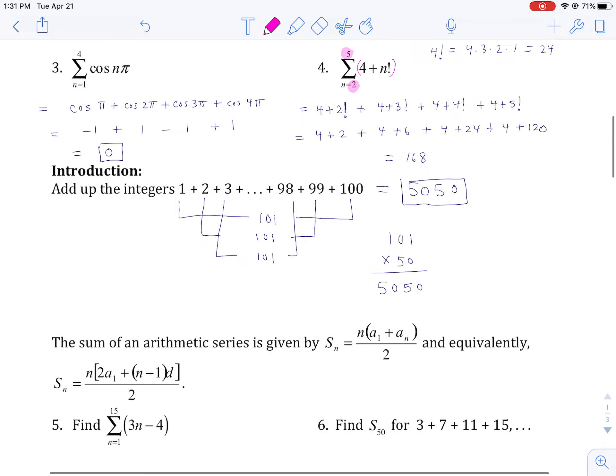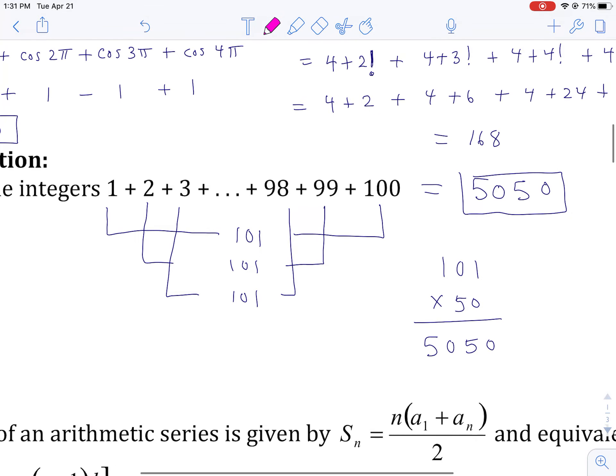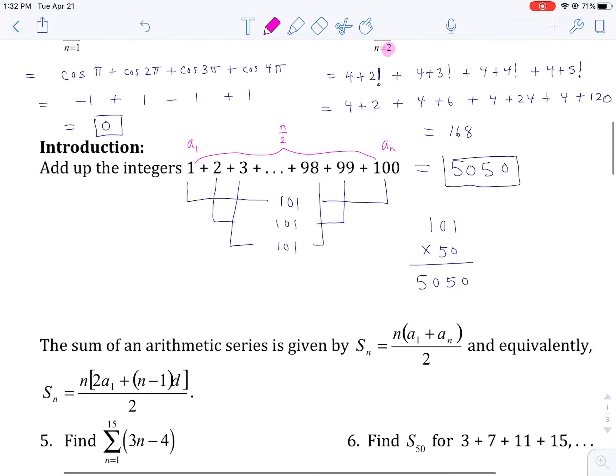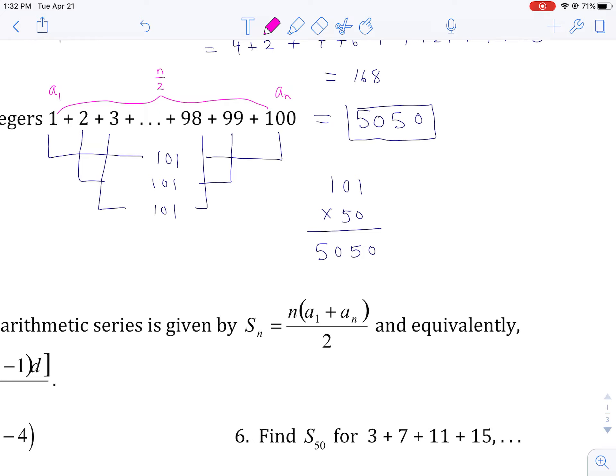What did Gauss do? Let's look at this. Abstractly, he looked at this as the first term. He looked at this as the last term or the nth term. And he realized there were 100 terms, or the number of terms were n over 2. And he thought, where'd he get the 101? He added up the first term and the last term. And he multiplied by 50. Well, what was that? That was n over 2.